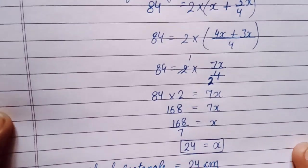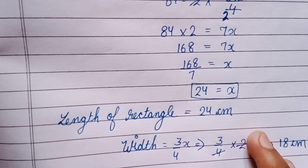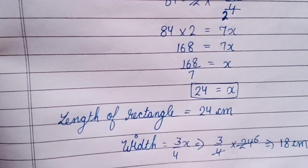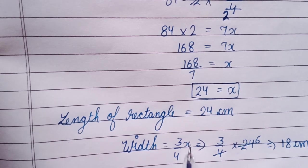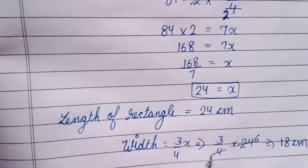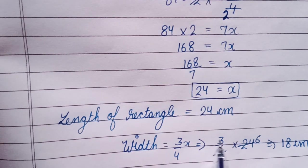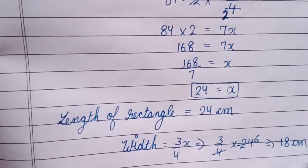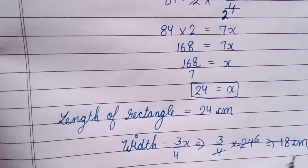So we have length of rectangle. After that we have to find width. For that we have 3 upon 4x. X's value which is 24, so we have 24 put here. And 4 into 6 is 24. After that, 3 into 6 is 18 cm. It means this is the breadth of rectangle, that is width.